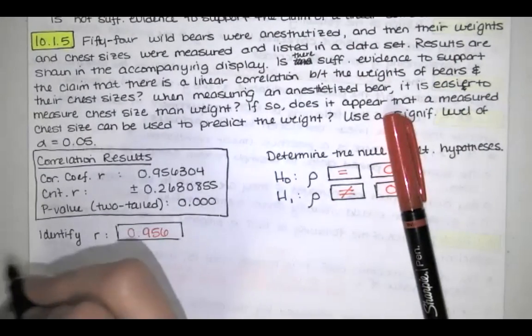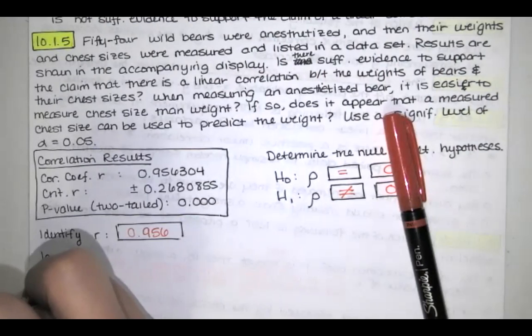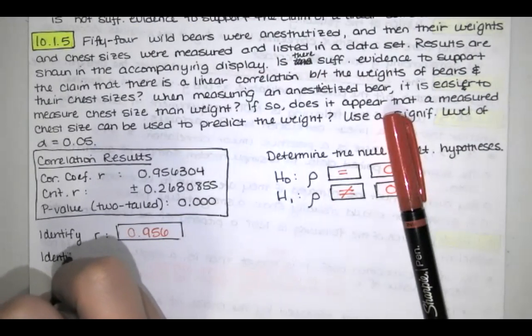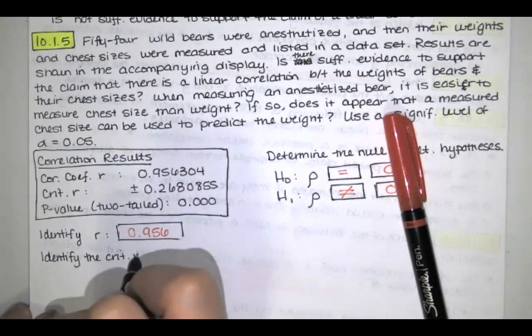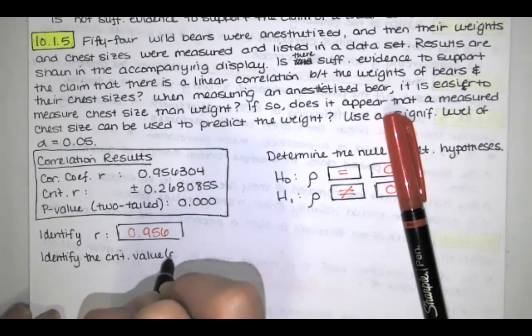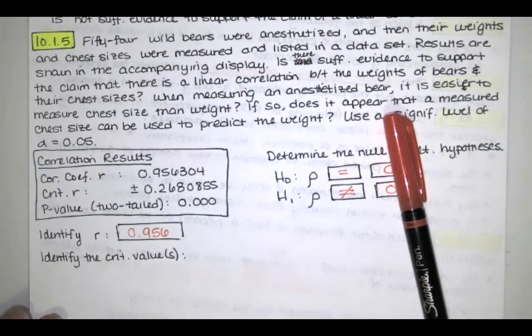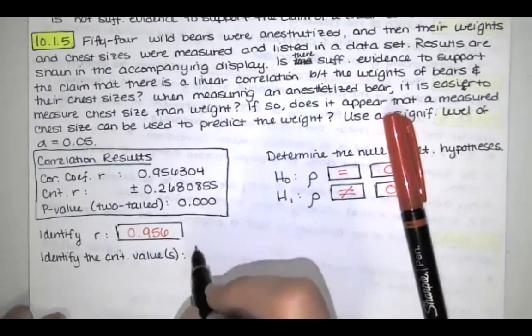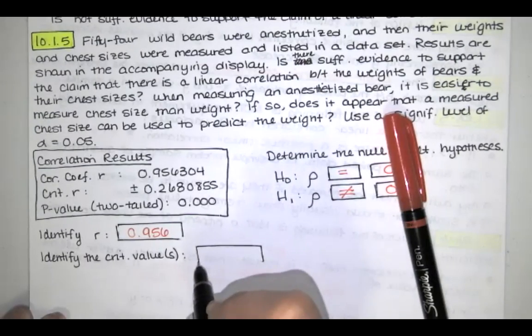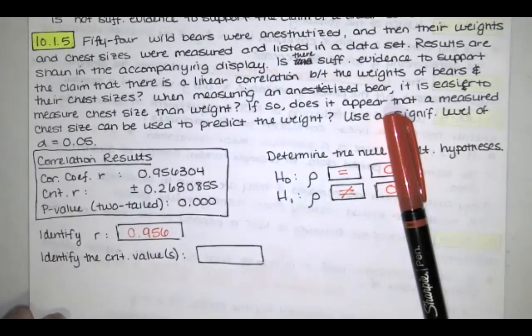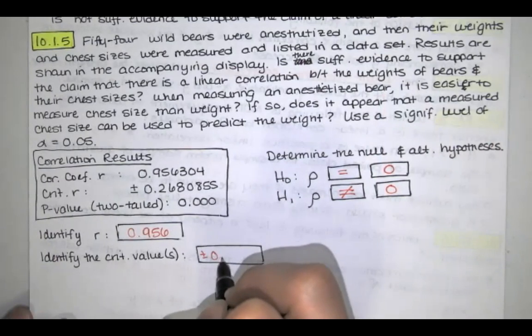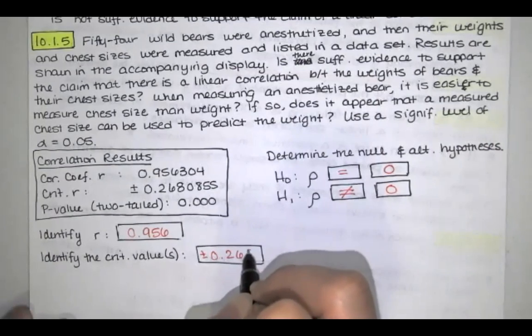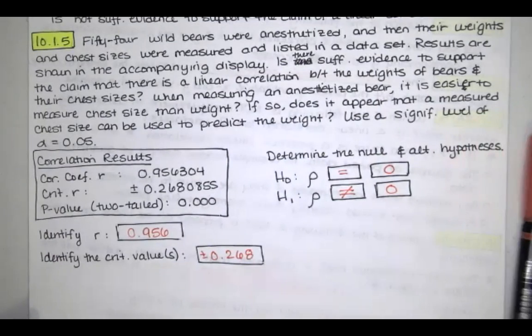Next, we're asked to identify the critical value or values. Now every time you are testing for correlation, you always have two critical values, and they want us to round to three decimal places again. And we'll say that there are two critical values, and they are plus and minus 0.268 when we round to three decimal places.